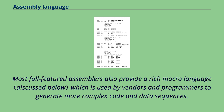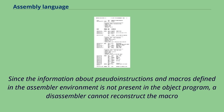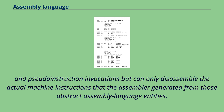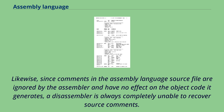Most full-featured assemblers also provide a rich macro language which is used by vendors and programmers to generate more complex code and data sequences. Since the information about pseudo-instructions and macros defined in the assembler environment is not present in the object program, a disassembler cannot reconstruct the macro and pseudo-instruction invocations but can only disassemble the actual machine instructions that the assembler generated from those abstract assembly language entities. Likewise, since comments in the assembly language source file are ignored by the assembler, a disassembler is always completely unable to recover source comments.